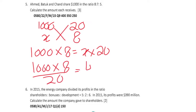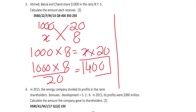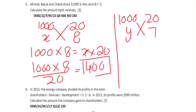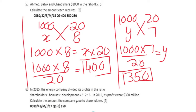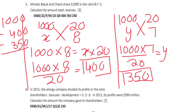Emmeth's share is $400. For Batuk's share: 1000 represents 20 parts and Batuk's ratio is 7, so 1000 times 7 divided by 20 gives us $350. For Chand's share, subtract the other two: 1000 minus 400 minus 350 gives us $250.